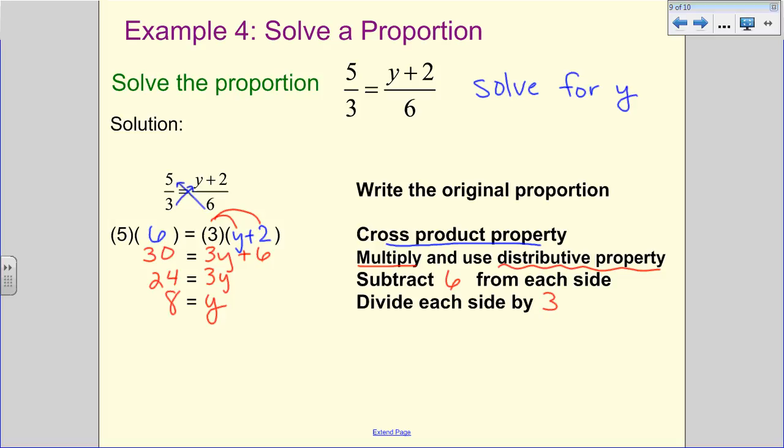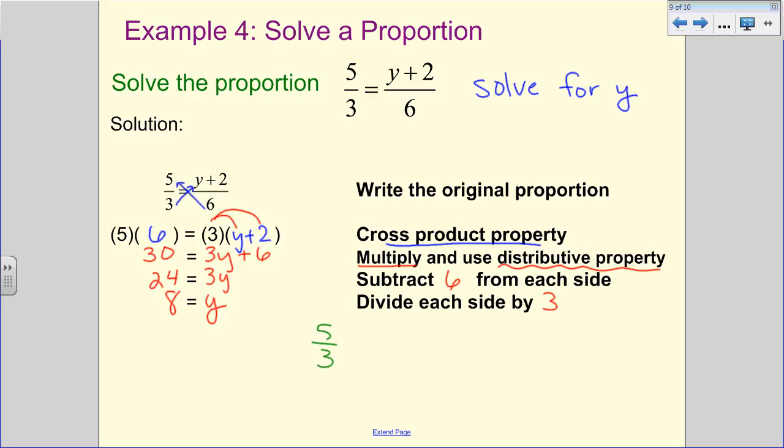You can check that answer by looking at 5 over 3 is equal to 8 plus 2 over 6. If we look at those fractions, we have 5 thirds is equal to 8 plus 2 is 10 over 6. When you look at those, those are the same ratio. They are equal to each other, so I know that Y is equaling 8 is the correct answer.